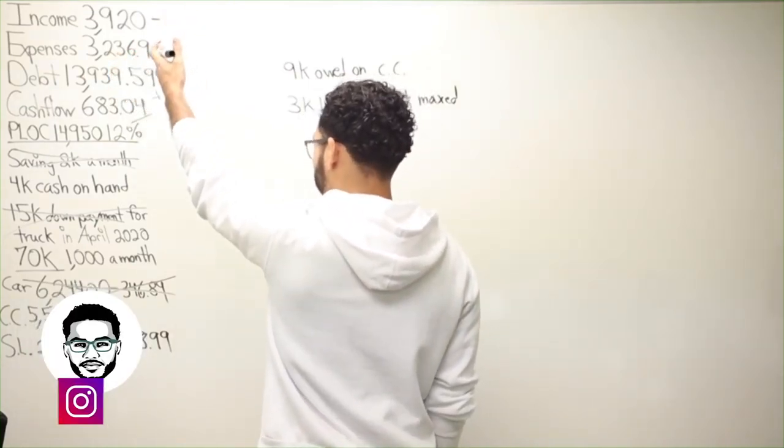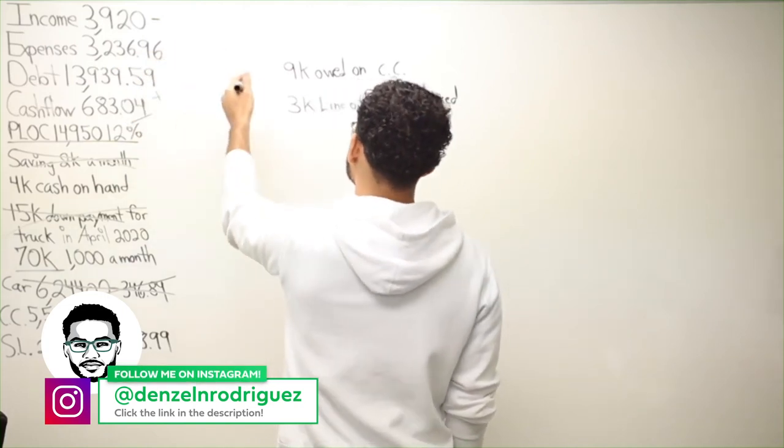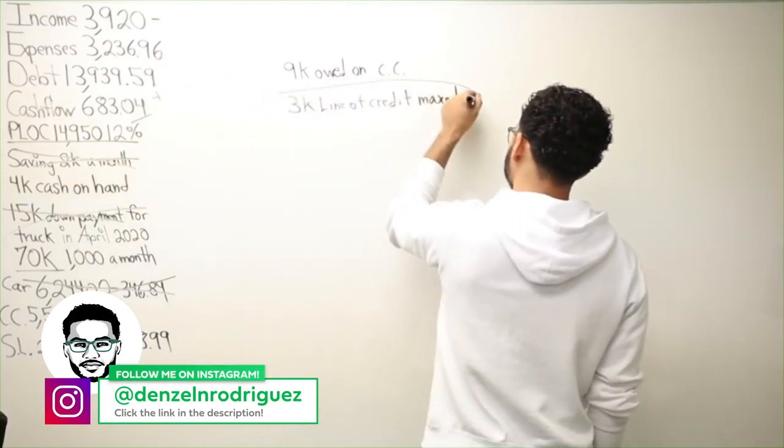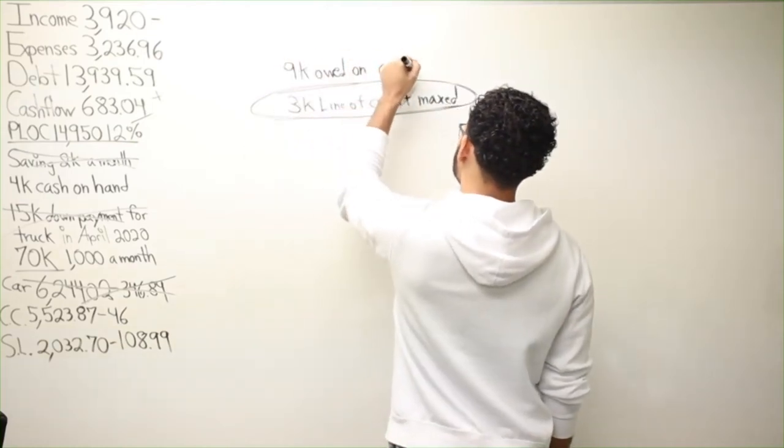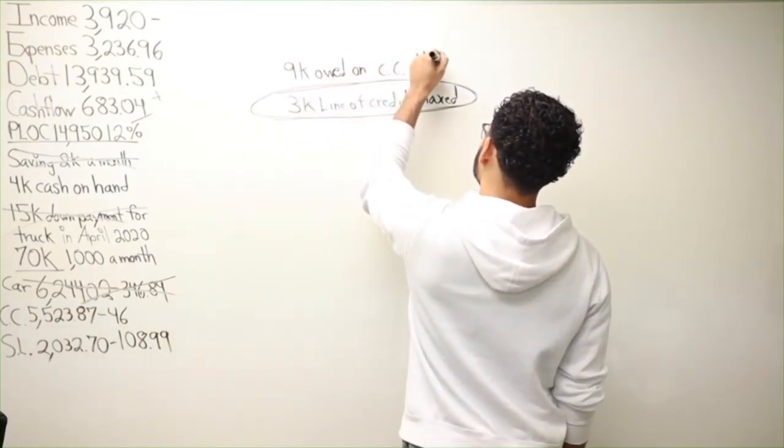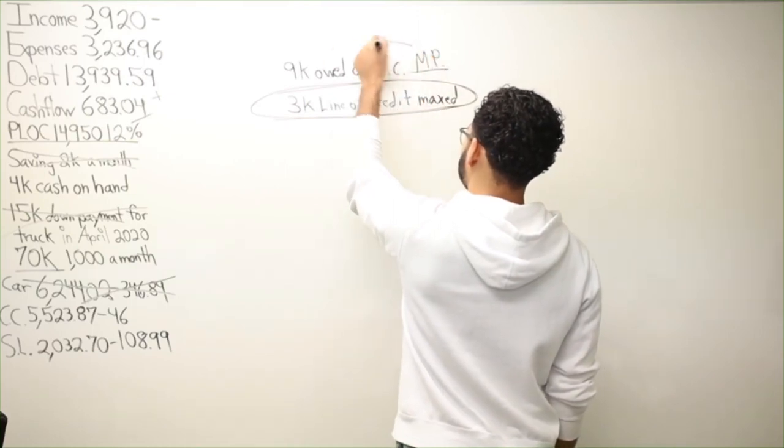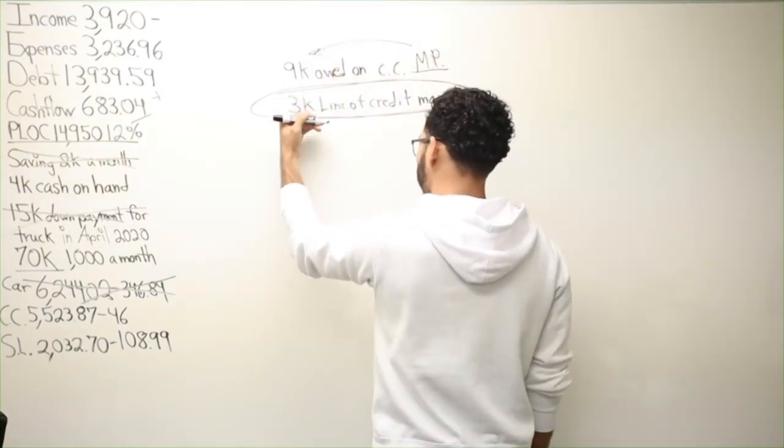Income, expense, debt, cash flow. You should be dumping all your income in here. Pay the minimum payment on the credit card. Cash flow stays in.